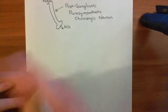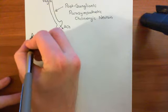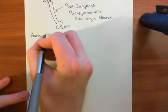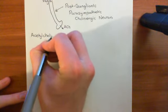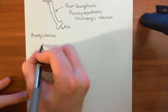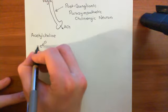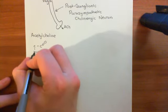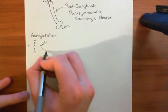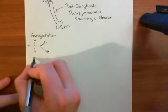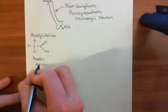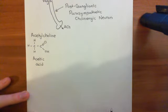Acetylcholine is an ester between acetic acid and the alcohol choline. Let me show you the structure of acetic acid, and then we'll discuss how you can esterify acetic acid with choline, which is an alcohol, to produce acetylcholine. Here is acetic acid, which is the old name for ethanoic acid - this is what you have within vinegar. It's the two-carbon carboxylic acid.